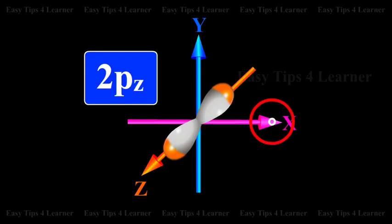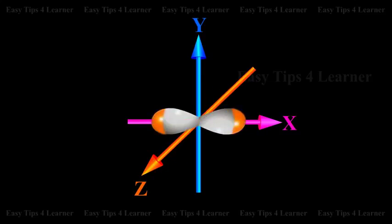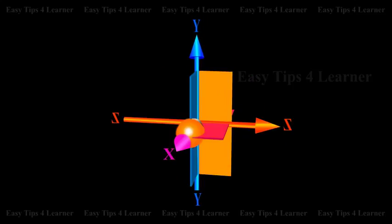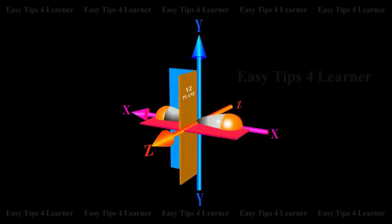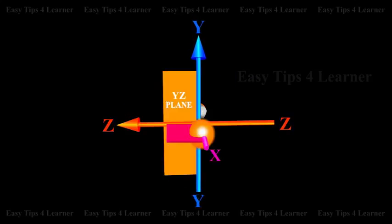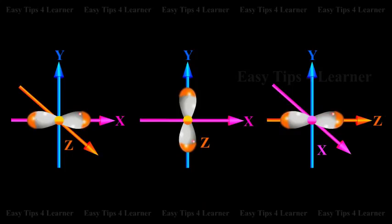They differ in their orientations. Each P orbital consists of two lobes symmetrical about a particular axis. Depending upon the orientation of the lobes, these are denoted as 2Px, 2Py, and 2Pz accordingly, as they are symmetrical about the x, y, and z axes respectively.